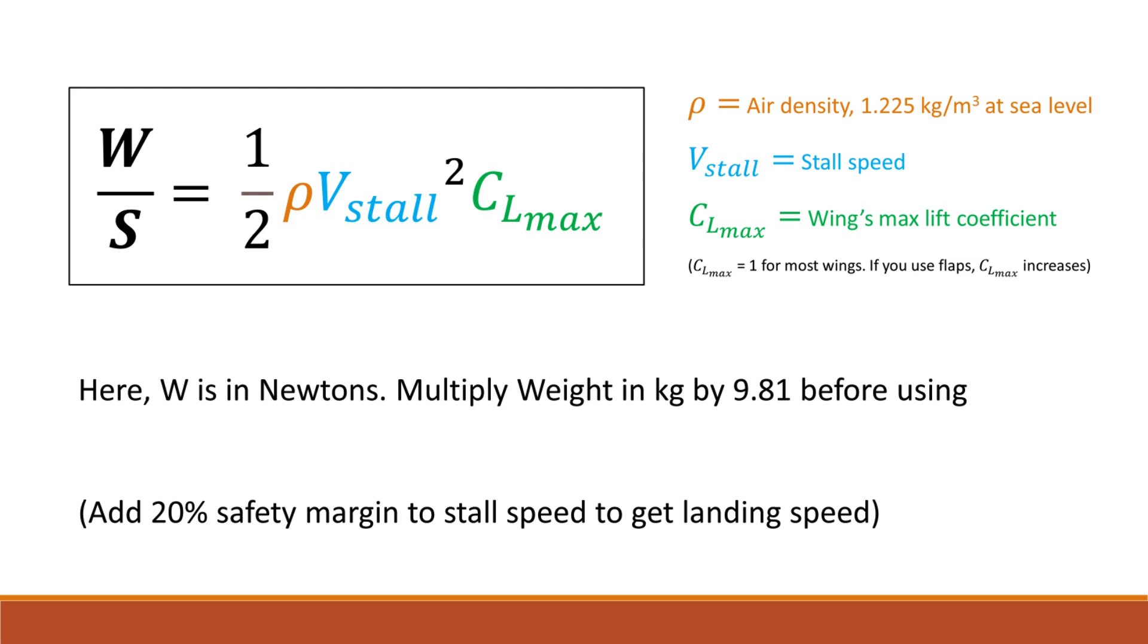Multiply W by 9.81 to convert kilograms to newtons. Add 20% safety margin to this speed to find the landing speed.